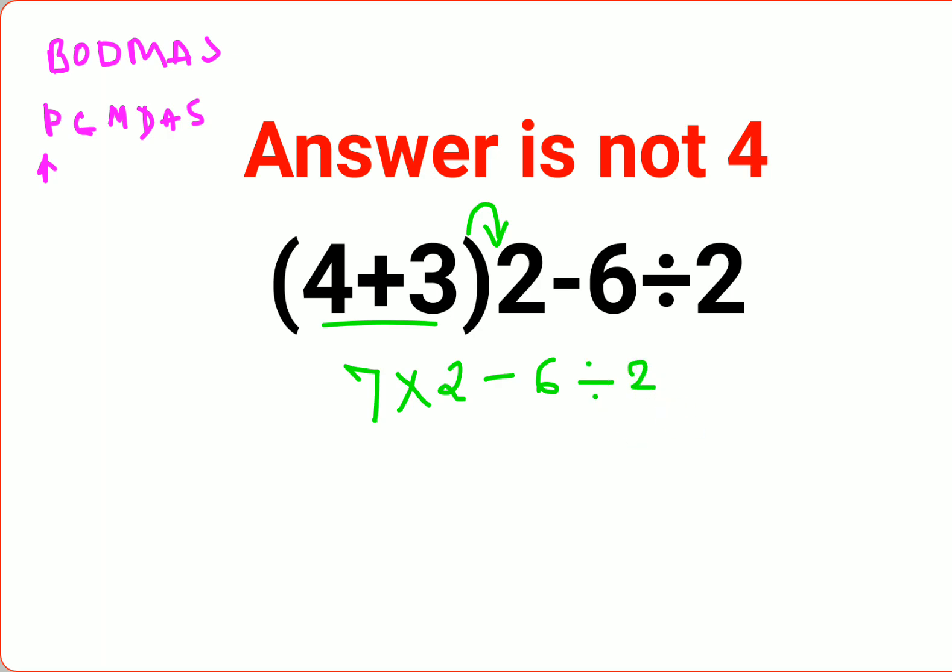Now please remember in BODMAS and PEMDAS, both cases you need to do multiplication and division first, then you should go to subtraction. So we need to do 14. 7 into 2 is 14 minus 6 divide by 2.